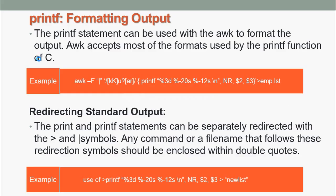The printf statement can be used with AWK to format the output. AWK accepts most of the formats used by the printf function of C. Here the name and designation have been printed in spaces 20 and 12 characters wide respectively. The printf requires \n to print a new line after each line. NR is the built-in variable which signifies the record number of current line.